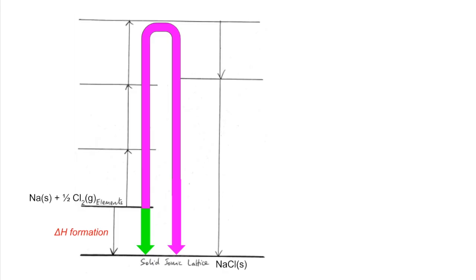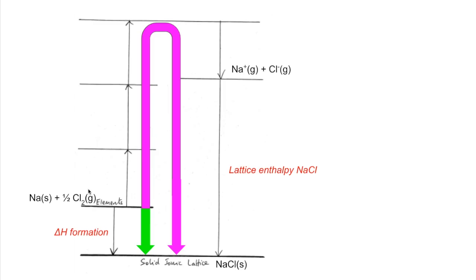Before going further, I want to populate the gaseous ions on the diagram, because when we combine these two gaseous ions we create the lattice — so that's the lattice enthalpy. Essentially, we need to turn solid sodium into one mole of Na⁺ gaseous ions, and likewise that half mole of Cl₂ gas needs to be turned into one mole of Cl⁻ gaseous ions.